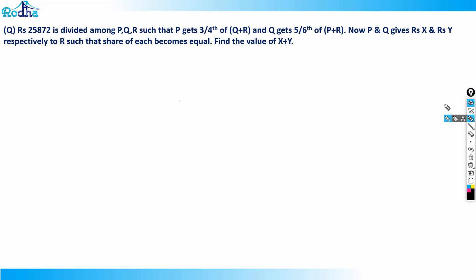Let's look at this question. Rupees 25,872 is divided among P, Q, and R such that P gets three-fourth of Q plus R, and Q gets five-sixth of P plus R. P and Q give rupees X and rupees Y respectively to R such that the share of each becomes equal. Find the value of X plus Y. This is a good application of ratios.